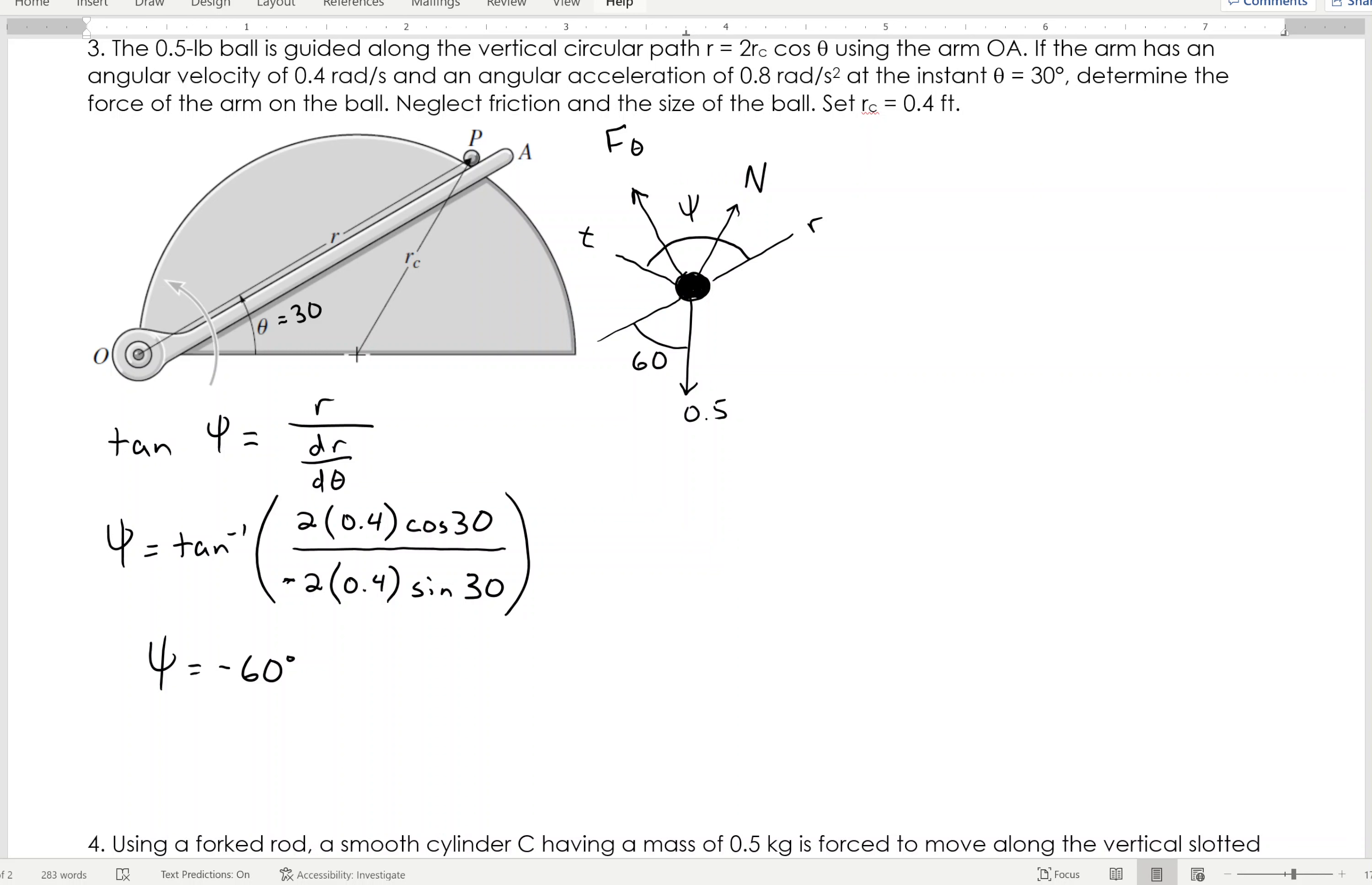And from that, I find that psi is negative 60 degrees. When I plug that into my calculator, now you might be thinking, well, what does negative 60 mean? Well, that is basically telling you, instead of from R to T, it will go from negative R to T, which will be this angle right here, which we will call the 60.